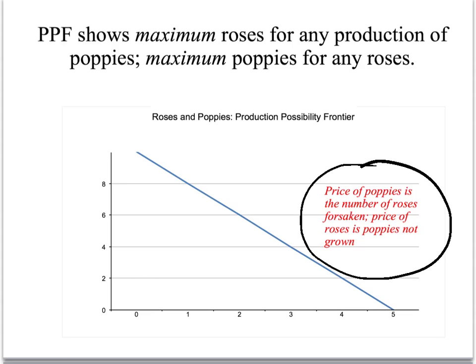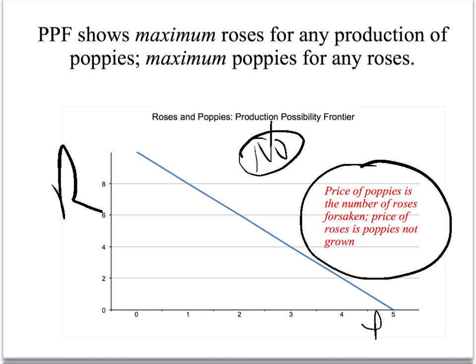The other way I drew this, you have two roses for every poppy. So the price of a poppy is two roses. The price of a rose is half a poppy. You can't be out here — not possible, because you don't have enough land. You won't be in here, because why would you waste your resources? You could have more of both.